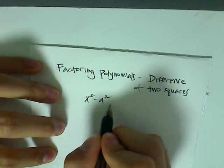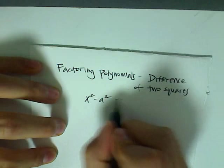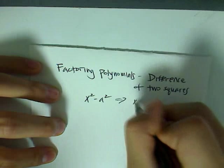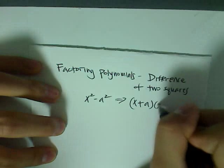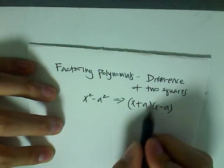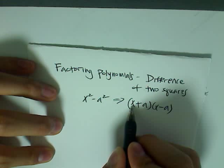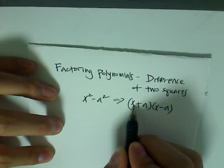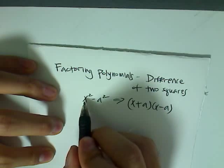So when you factor this polynomial completely, you are always left with the equation x plus a times x minus a, where it's basically the multiplication of the sum and the difference of the two bases, where the two bases are x and a.